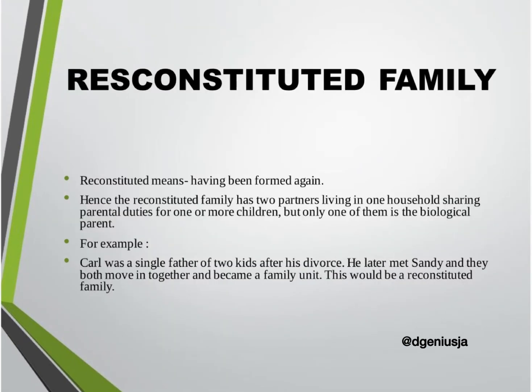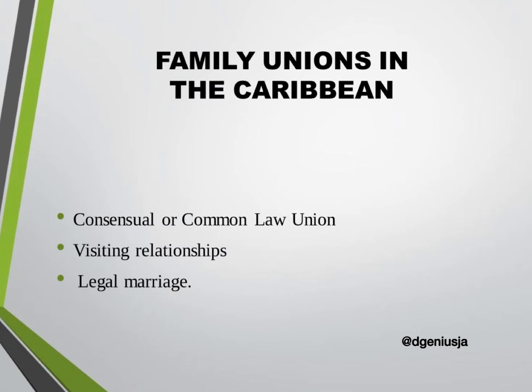Reconstituted family. Suppose Carl and Deesha decide to get a divorce. Carl later moves on and decides to marry Sandy. They now form what is called a reconstituted family, and reconstituted means having been formed again. Hence the reconstituted family has two partners living in one household sharing parental duties for one or more children, but only one of them is the biological parent.